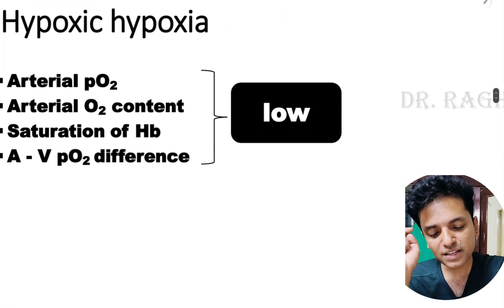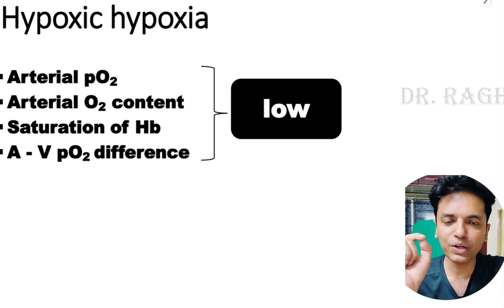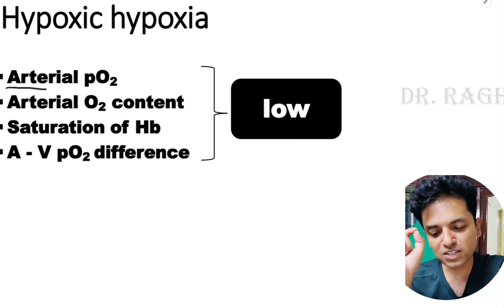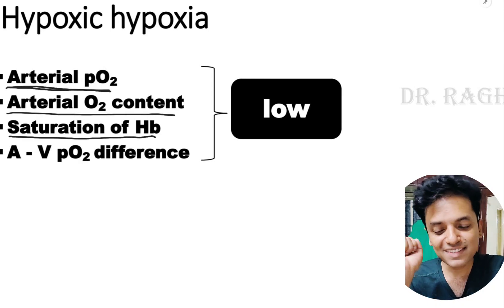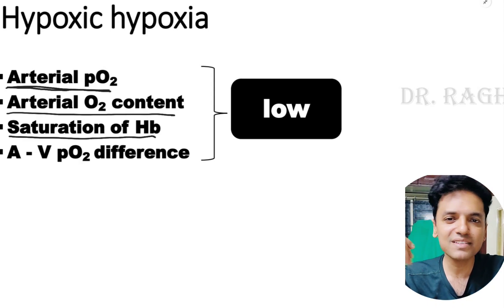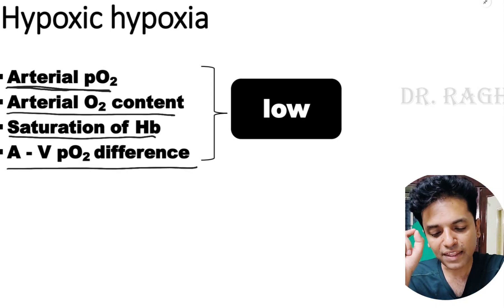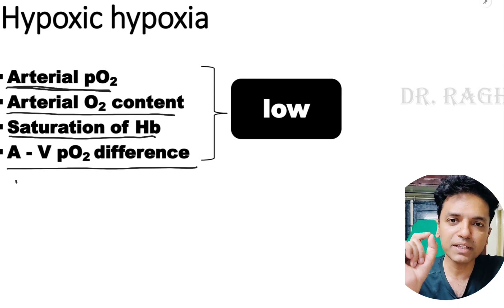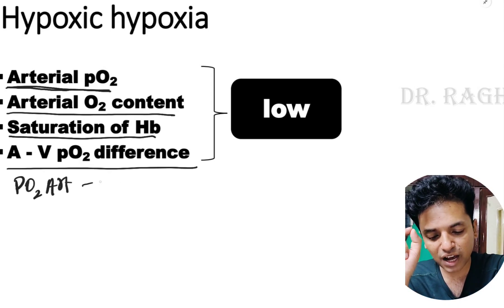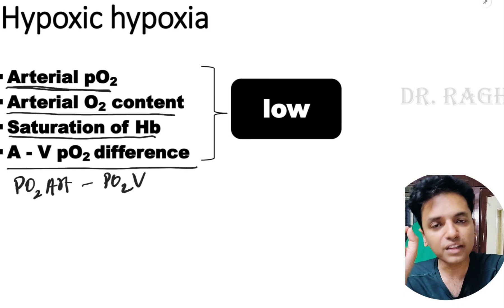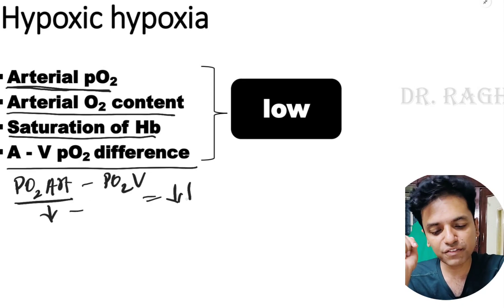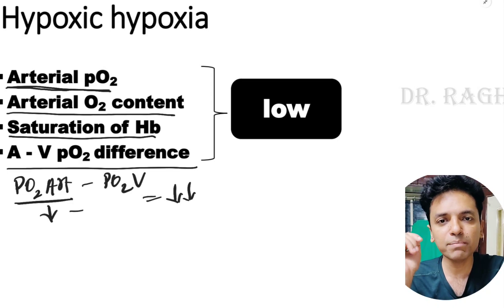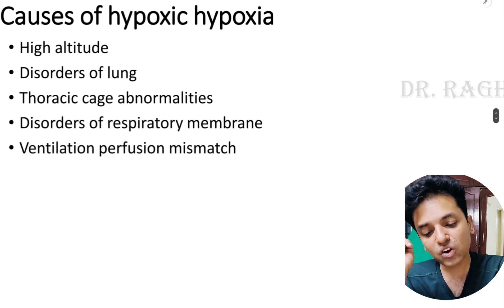In hypoxic hypoxia, the most important feature is that arterial pO2 is low, hence arterial oxygen content is low, and percent saturation of hemoglobin is also low. The a-minus-v pO2 difference — the difference between arterial and venous pO2 — is also low, because as arterial pO2 decreases, the overall difference decreases.